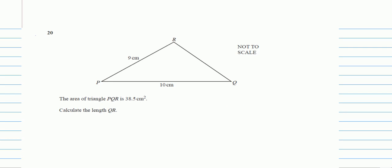It says the area of triangle PQR is 38.5 cm squared and we are given two sides 9 cm and 10 cm, and then straight away they are asking us for the third side which is QR, and it is for six marks.